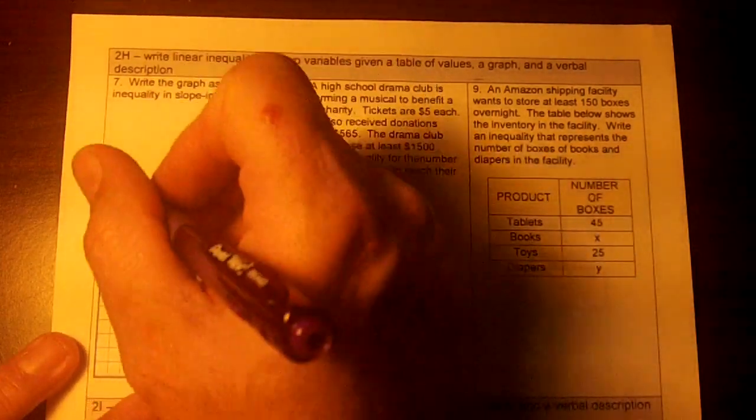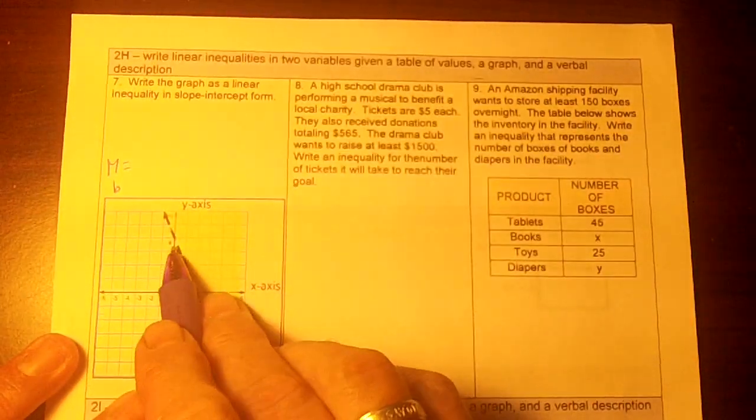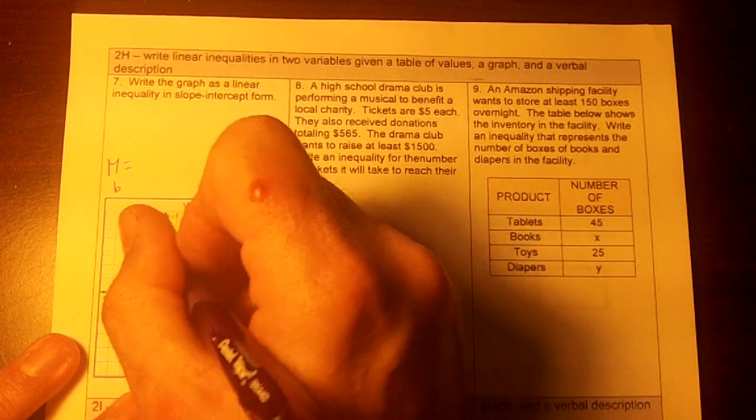So right here, let's do the graph. We need to know our slope and our y-intercept, don't we? The y-intercept is right here, which is 5.